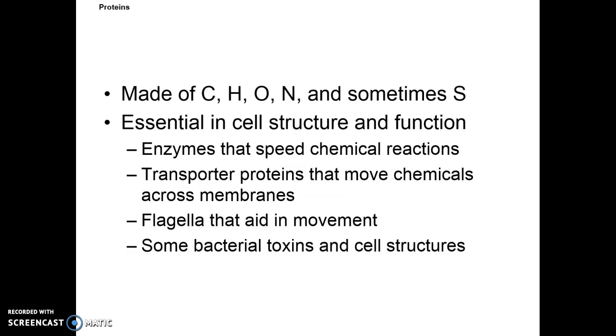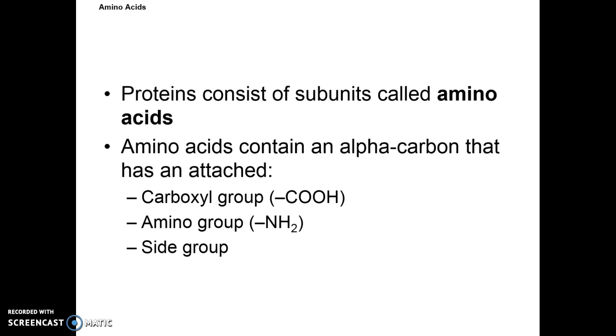Proteins, again, carbon, hydrogen, oxygen, nitrogen, and sometimes sulfur. When it's sulfur-based, we say that they have cysteine arms or cysteine units. Essential in cell structure and function. These can be made up of enzymes that speed up chemical reactions. They can be transporter proteins. They can be structures in flagella that aid movement. And some bacterial toxins are in fact made of proteins, which means that if the environment the bacteria was growing in was deficient of a specific type of protein, that bacteria may not be able to make the toxin necessary to make you sick.